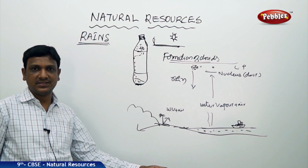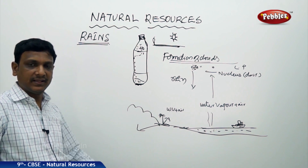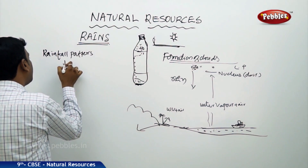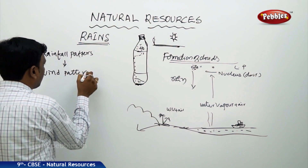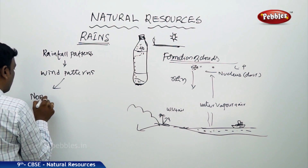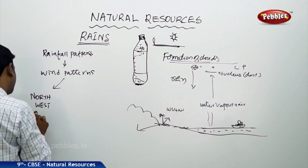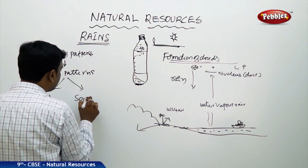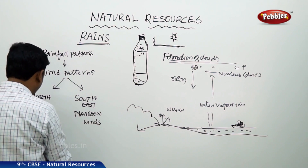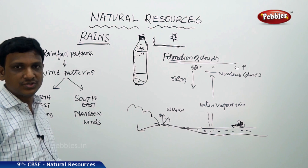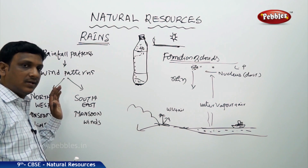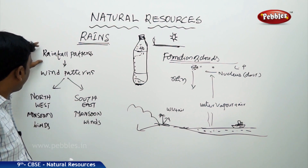In our country, rainfall happens seasonally, and these rainfall patterns are based on wind patterns. The rainfall patterns are affected by wind patterns — specifically the northwest monsoon winds and southeast monsoon winds. We hear in weather reports that the southeast monsoon has hit a certain coast of India. Depending on these wind patterns, the rainfall patterns are affected.